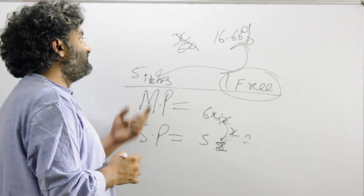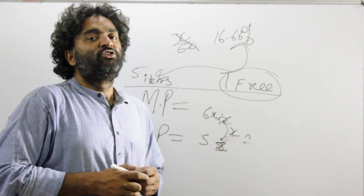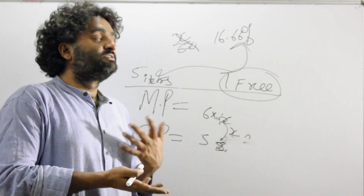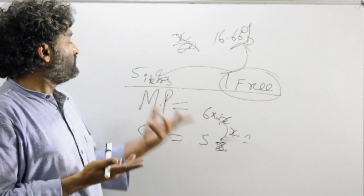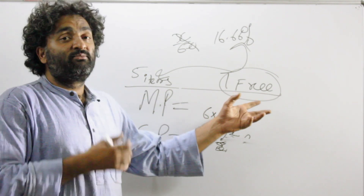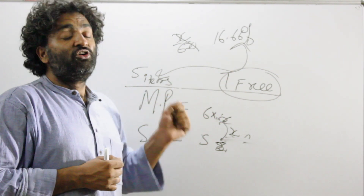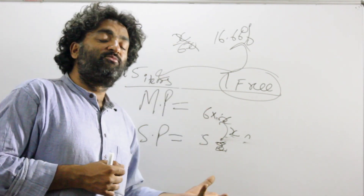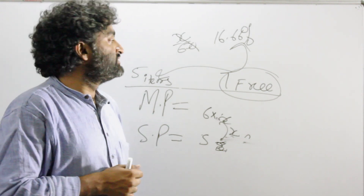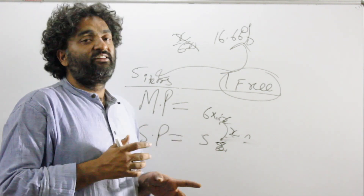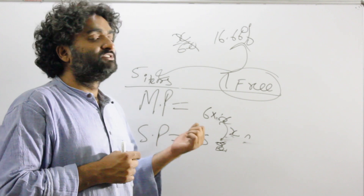So that means giving one item free on buying five items is the same as giving a discount of 16.66%. If you go to a shop and he says do you want one item free on five items or do you want 16.66% discount — do not get confused, they are the same thing. We'll look at more examples of this.